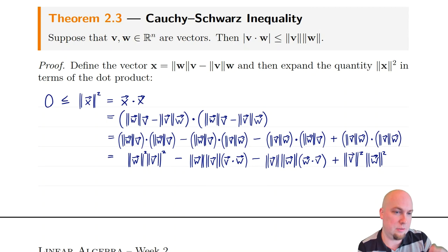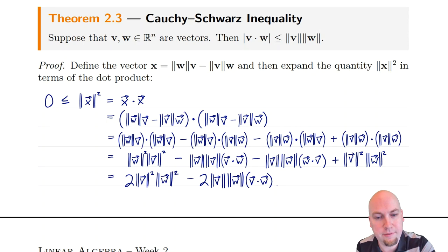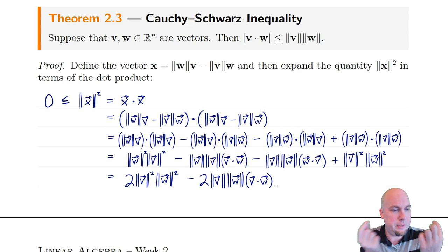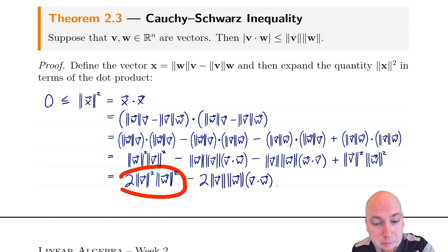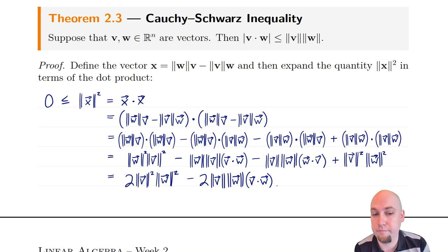The two cross terms don't simplify as nicely, but we do get a length of w and a length of v pulling out in front, leaving v dotted with w, which we can't simplify further. Similarly for the other cross term, we pull out length of v and length of w, leaving w dotted with v. Now some terms are equal to each other. The two squared terms are both just length of v times length of w, all squared — so we combine them to get two of that term. And since the dot product is commutative, v dot w equals w dot v, so the two cross terms combine into two times length of v times length of w times v dot w.